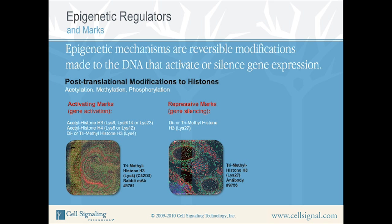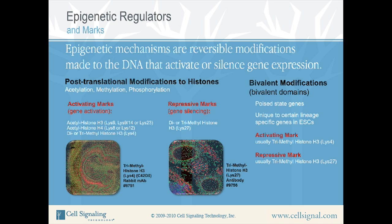A special case in the use of activating and repressive marks is called a bivalent modification or bivalent domain. Bivalent modifications occur on poised-state genes and are unique to certain lineage-specific genes in embryonic stem cells. The poised-state gene simultaneously contains one activating mark, usually trimethyl-histone H3 lysine 4, and one repressive mark, usually trimethyl-histone H3 lysine 27. As differentiation occurs along a specific lineage pathway, the repressive mark for genes in that lineage is removed and the activating mark remains. However, repressive marks for genes in other lineages remain present.